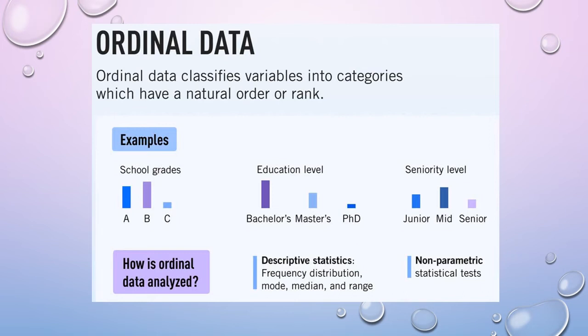Another example is education level. Using the Sri Lanka Qualifications Framework, we can see the hierarchy: a master's degree is a higher education level than a bachelor's, and a PhD is the highest qualification. Seniority level is also ordinal: senior is the highest, mid-level is in between, and junior is the lowest — terms commonly used in university systems.